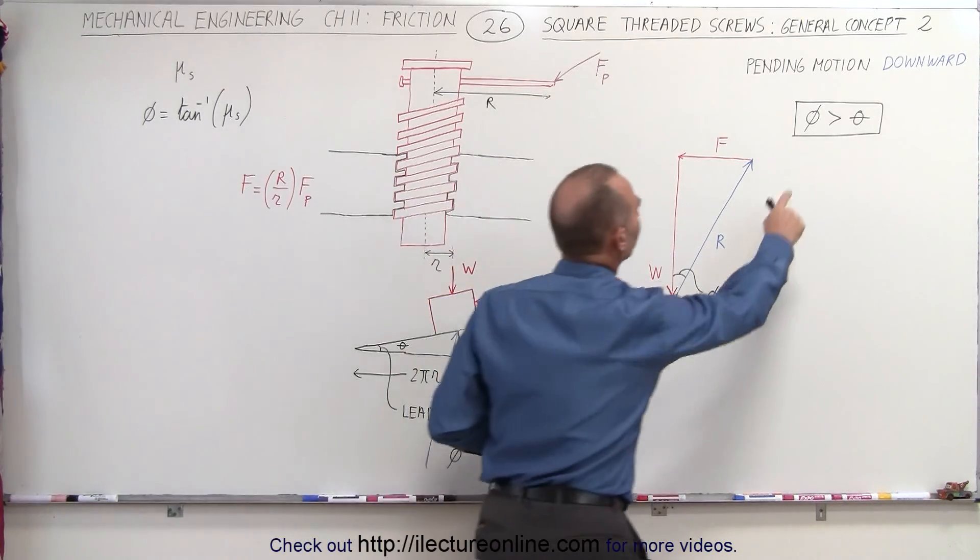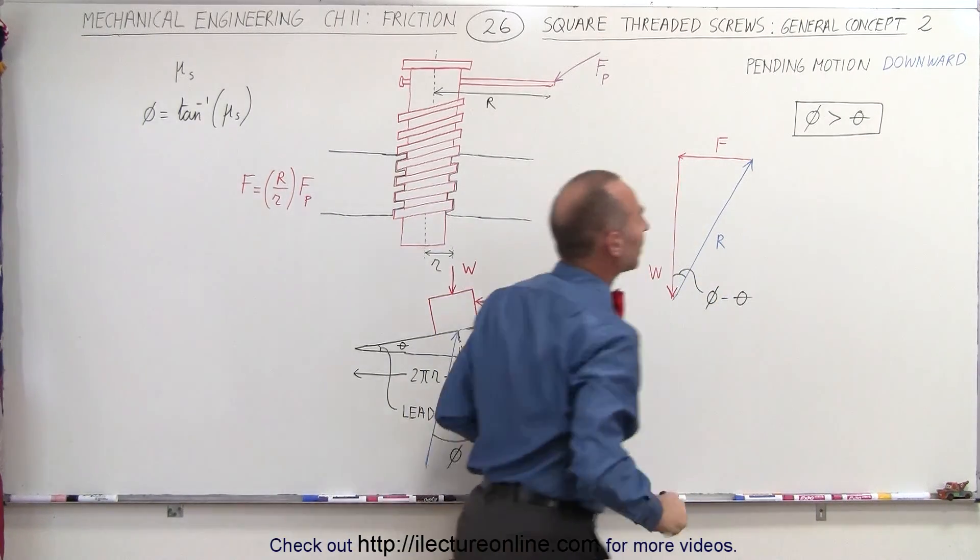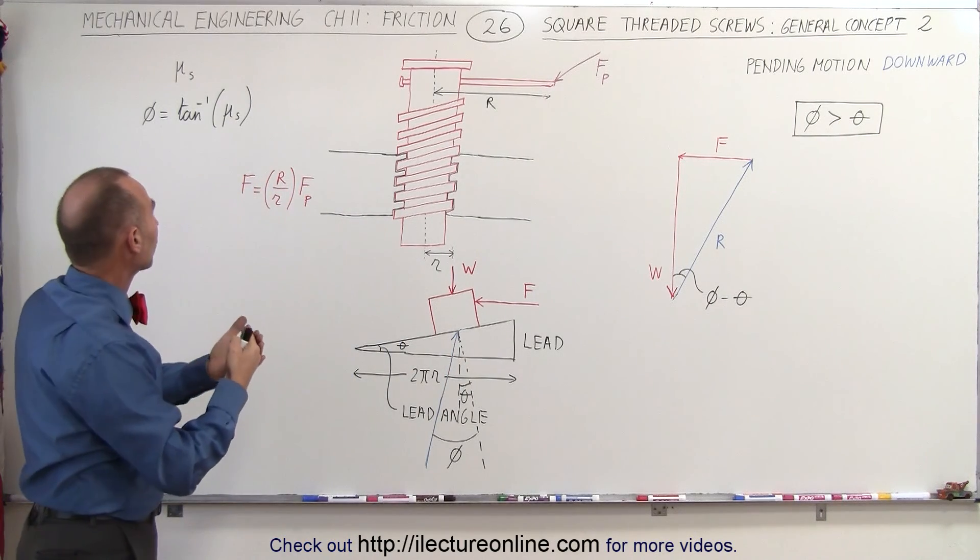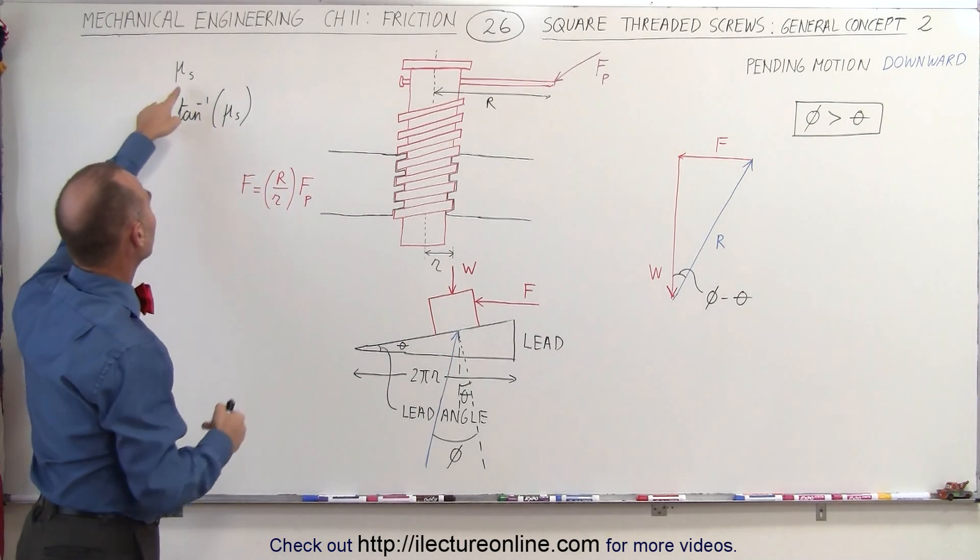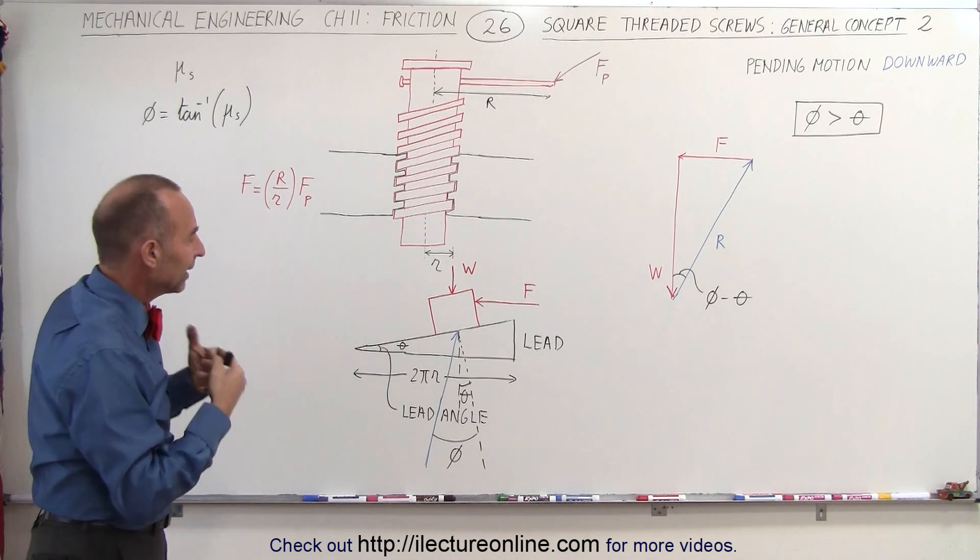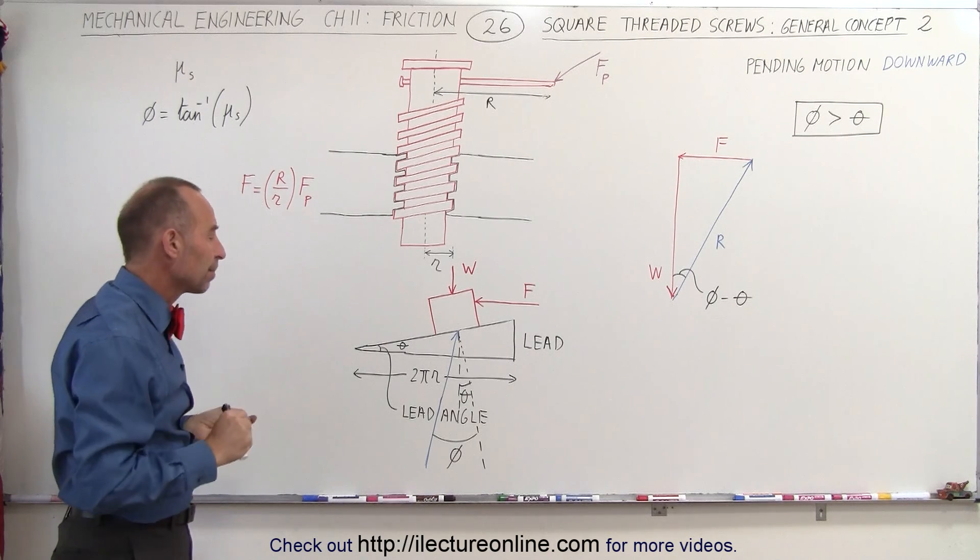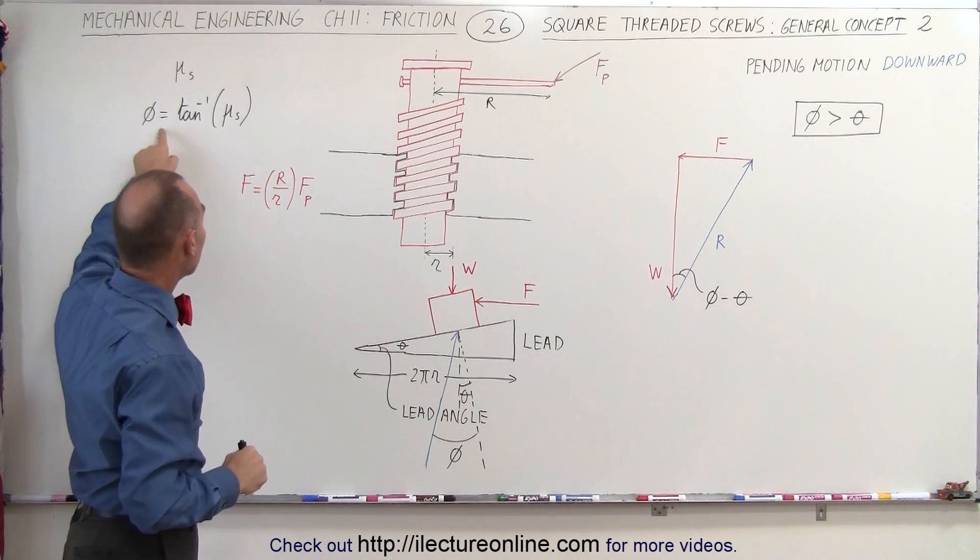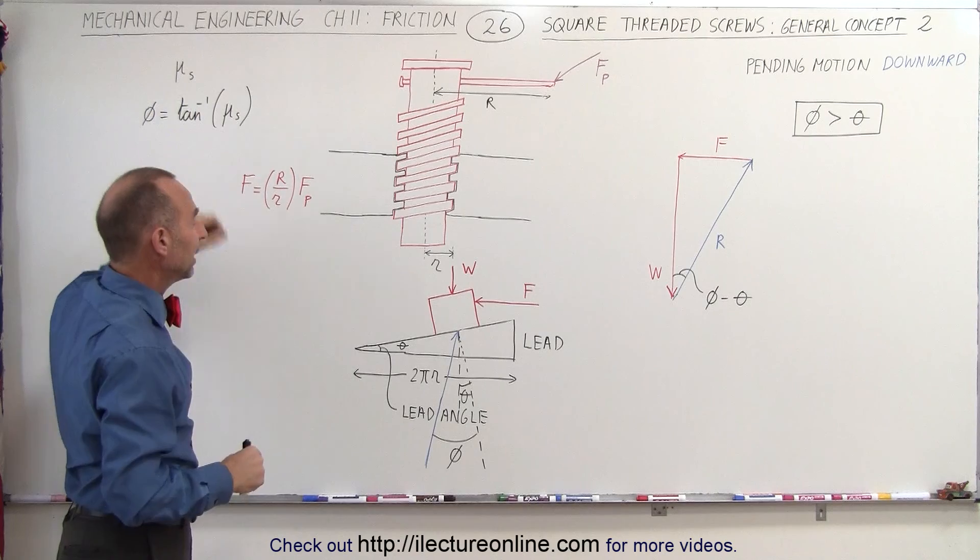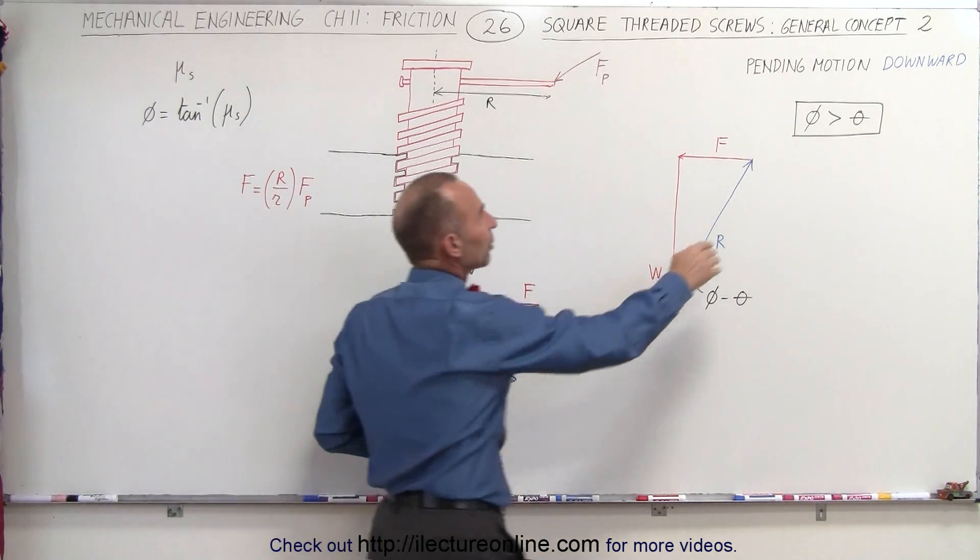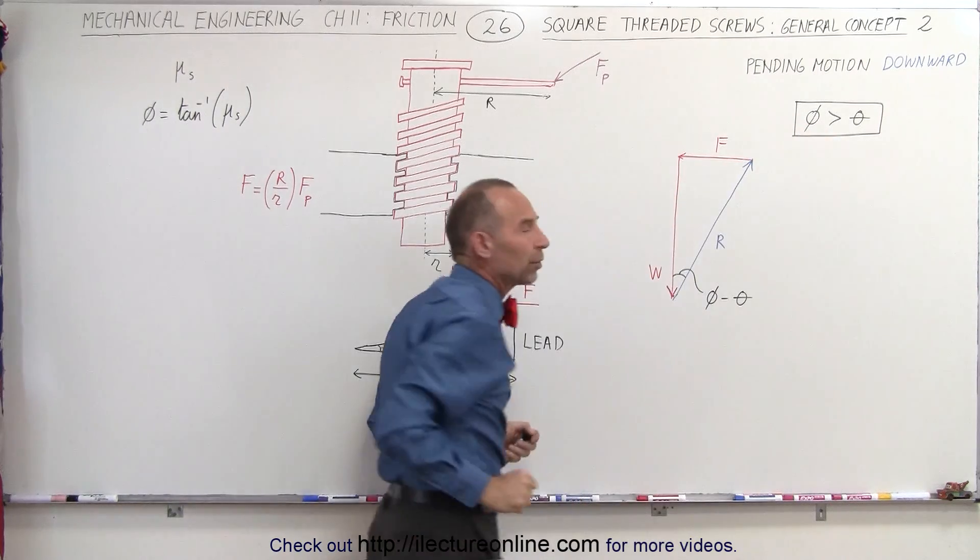One, where the angle phi is larger than the angle theta. The angle phi is the angle between the reactionary force and the normal caused by the coefficient of friction. Theta is what we call the lead angle, the angle made by the thread. So if the angle phi caused by the coefficient of friction is larger than the lead angle, then we have a case here where phi is larger than theta and that's what we're talking about here.